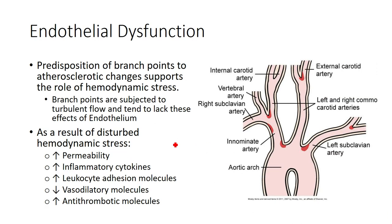Endothelial dysfunction really sets the stage for cardiovascular disease. We first see it develop at branch points because they're more subject to turbulent flow due to the nature of bifurcations and less likely to benefit from the protective effects of laminar flow. That's why we assess for plaque formation at these landmarks — for example, at the bifurcation of the carotid arteries.